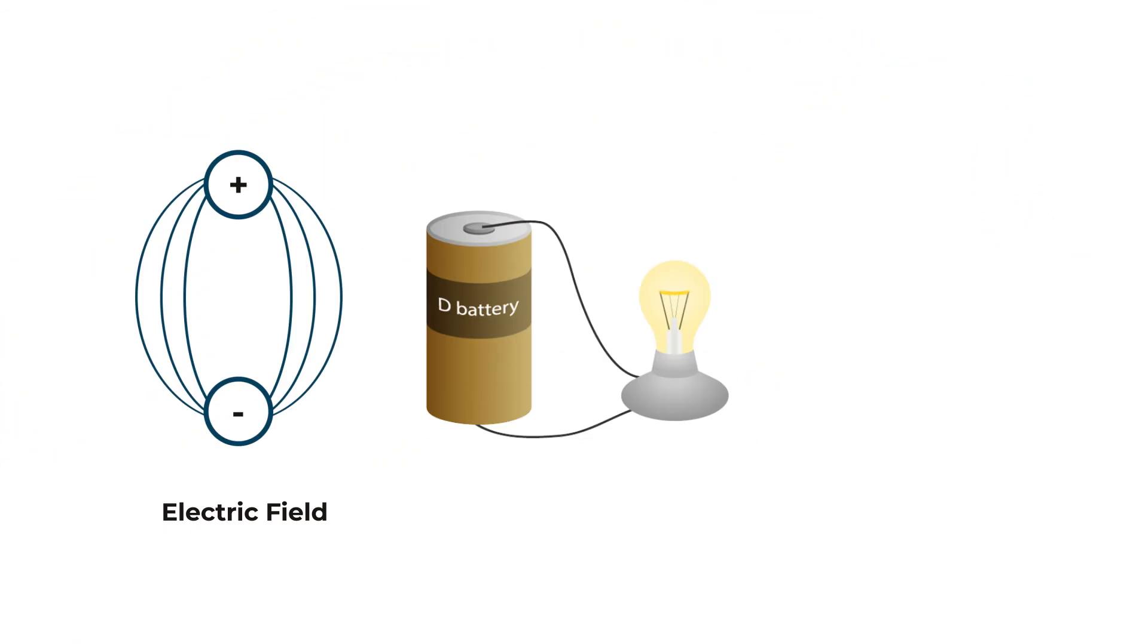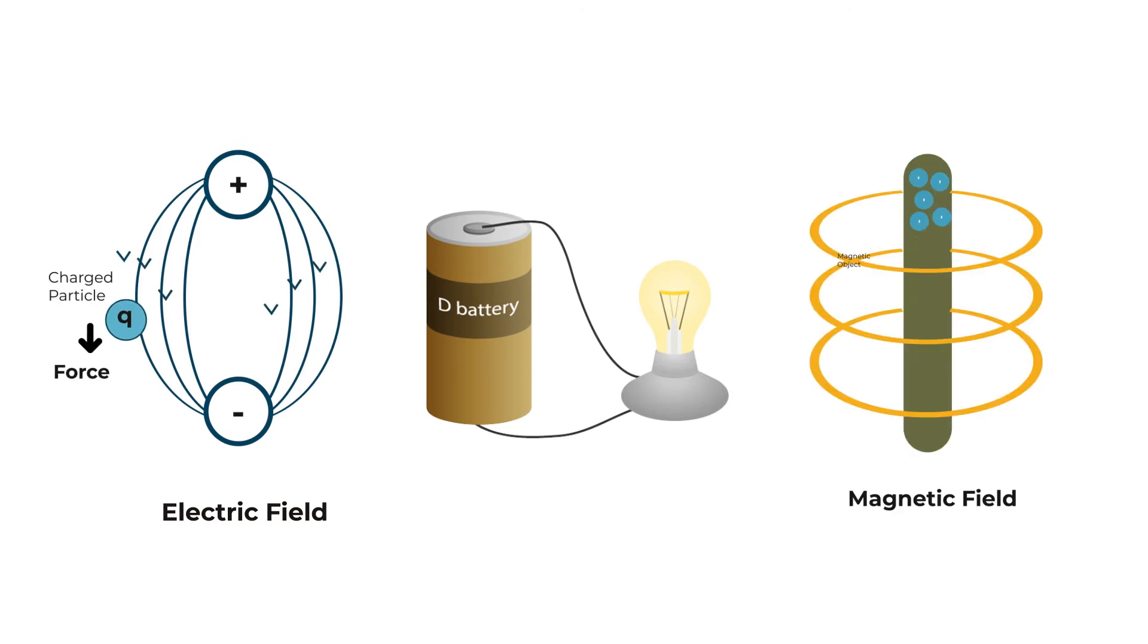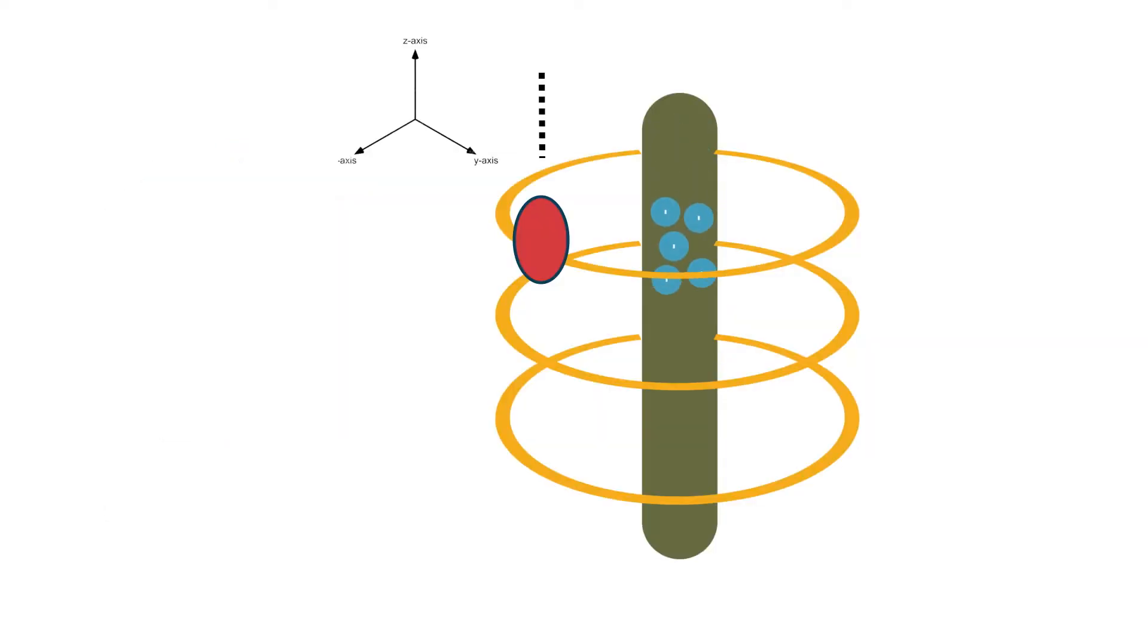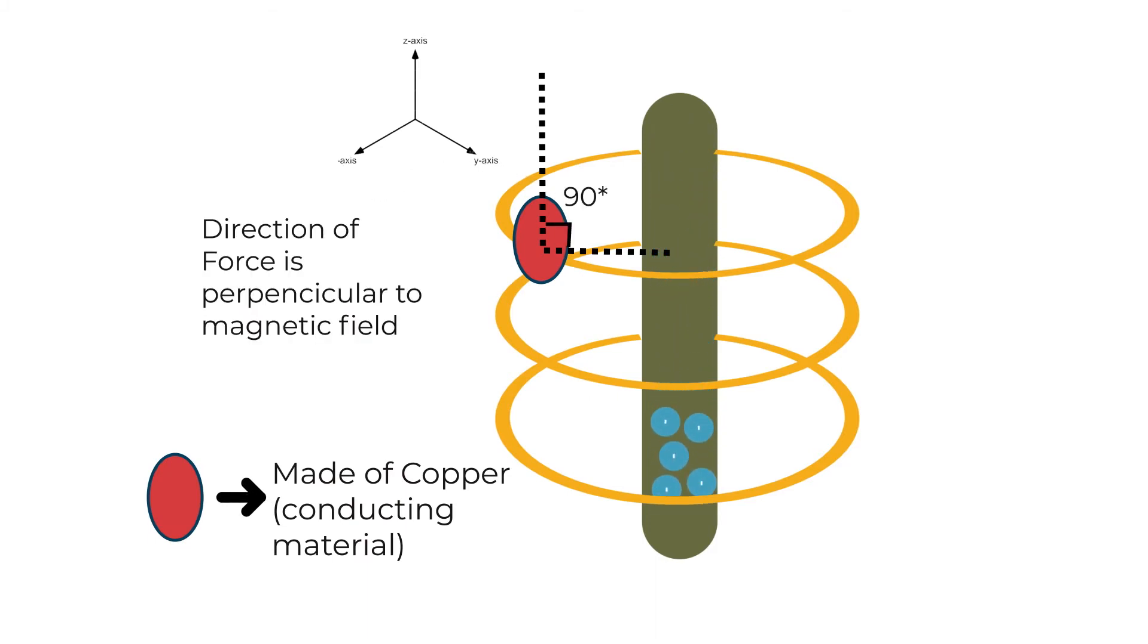Similarly, in the case of the electric field, any charged particle experiences a force and in a magnetic field, any magnetic object experiences a force. One more thing you need to understand is that when an electric conductor is kept in a magnetic field, it experiences a force in the perpendicular direction of the magnetic field.